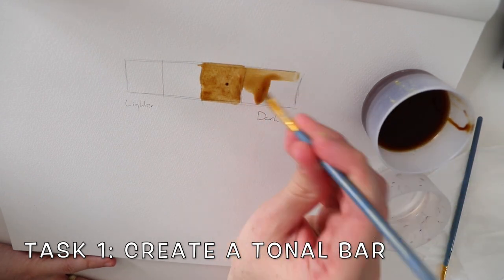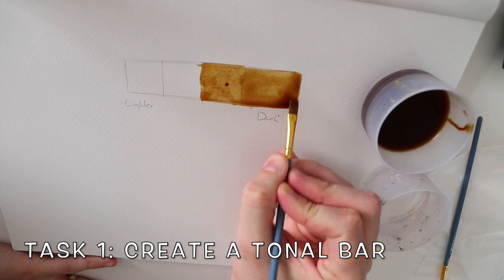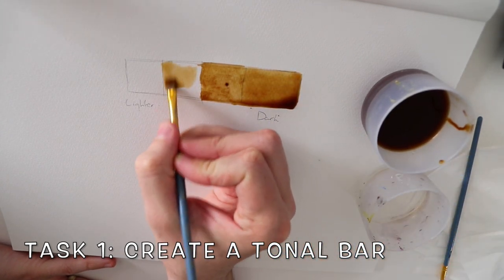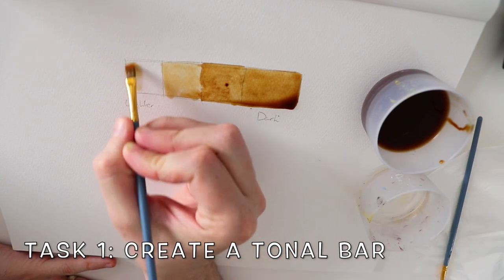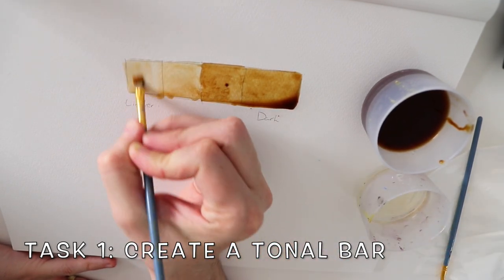I would suggest starting in the middle of your bar because with the dark section you can always add more color or mix up some more coffee afterwards that has less water in it, and then from the middling section you can just add more water to the lighter side of the tonal bar.